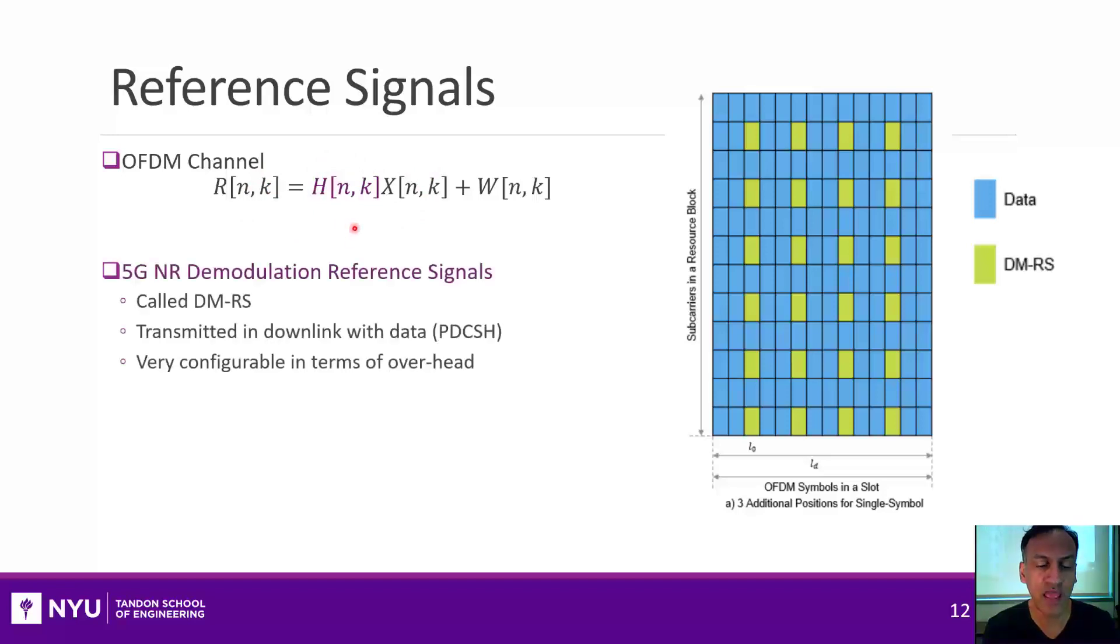So what we do is we add what are called reference signals. So in the 5G new radio standard, and it applies basically in various forms to all OFDM systems, we reserve some small number of the symbols resource elements in each slot for reference. They have the name demodulation reference signals, another crazy acronym, DMRS, and we see them here in this yellow color.